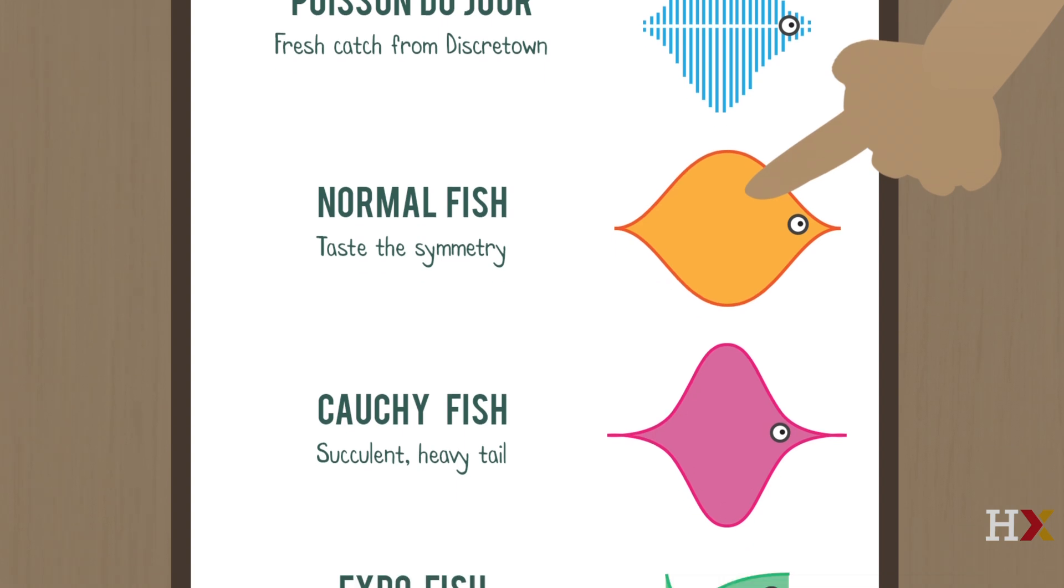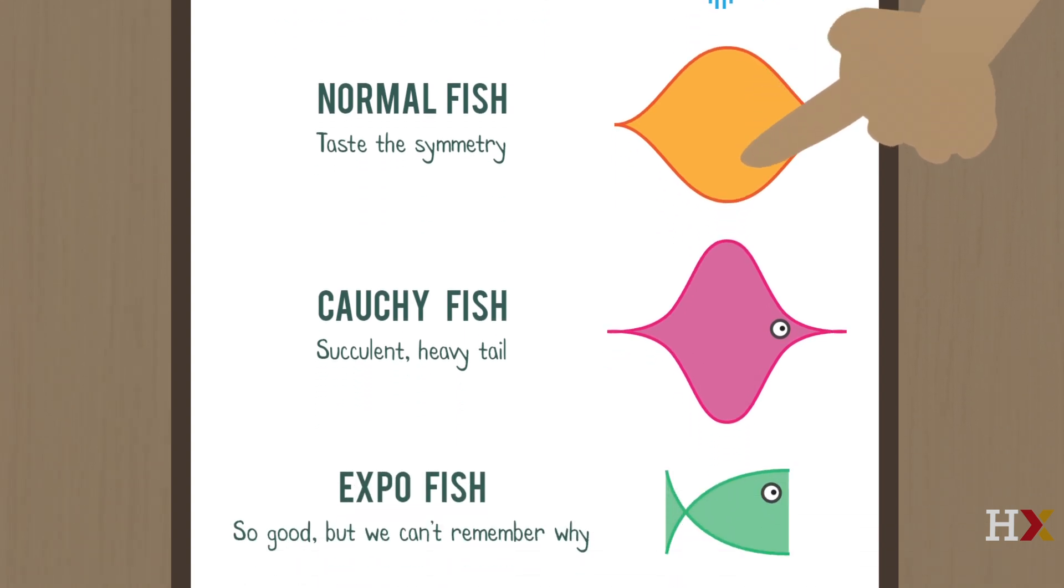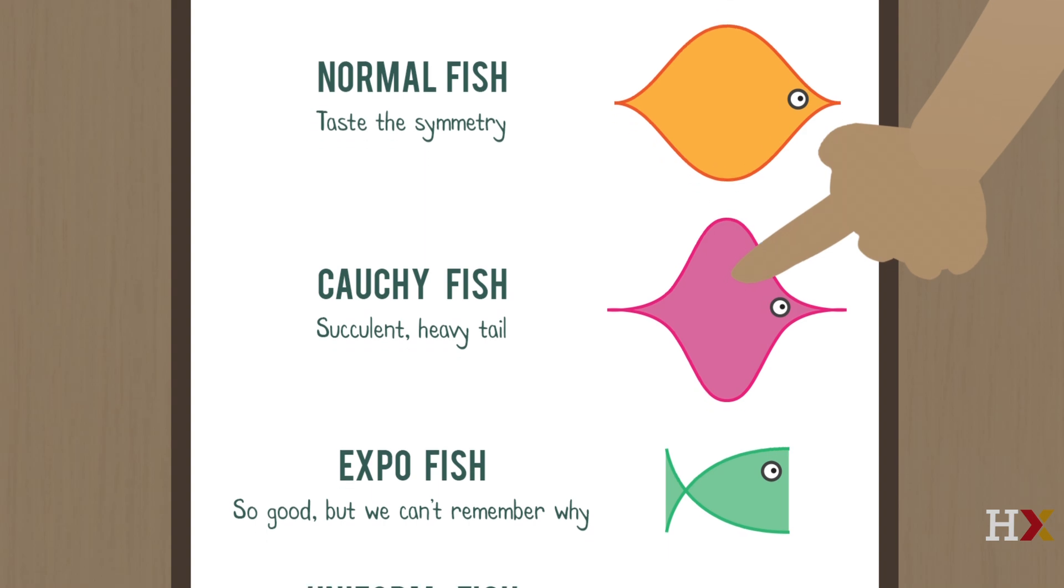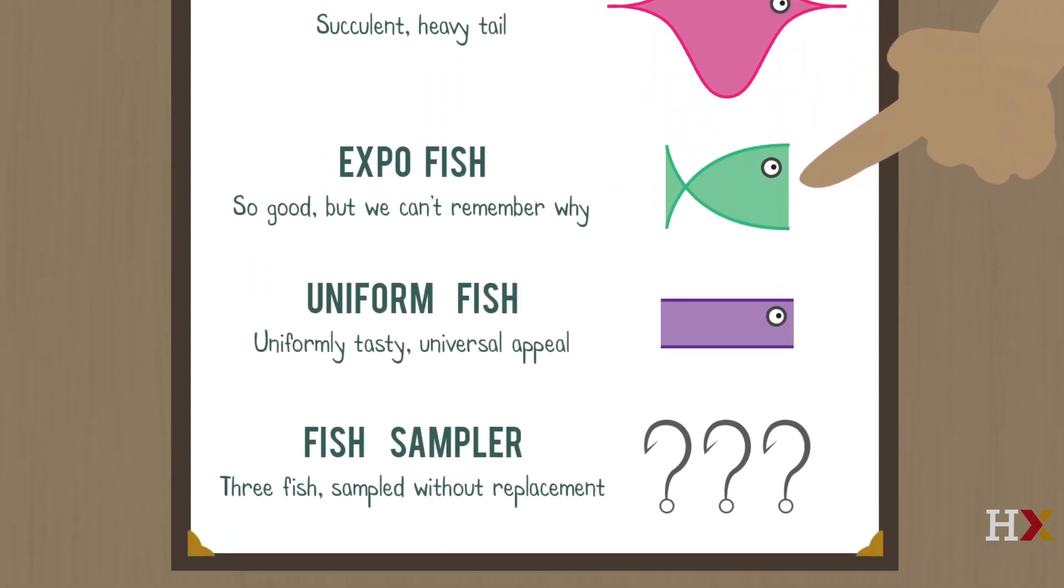But if you'd like something more exotic, you can try the Koshi fish. It has an amazingly thick, juicy tail. Or the expo fish. It will make your hunger decay exponentially.